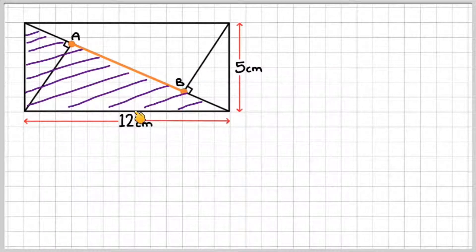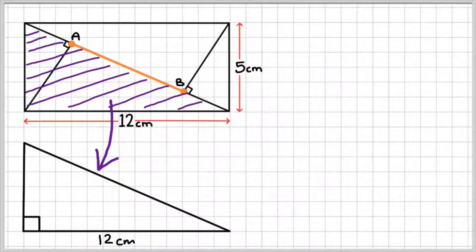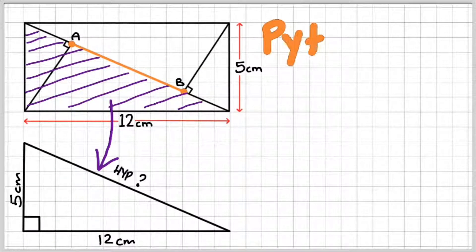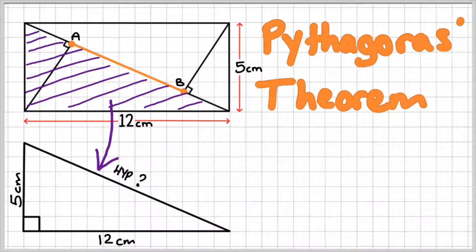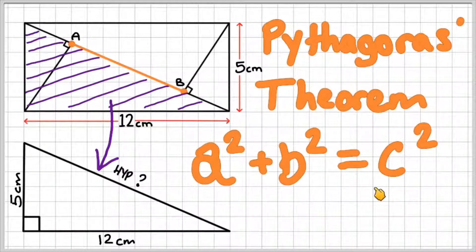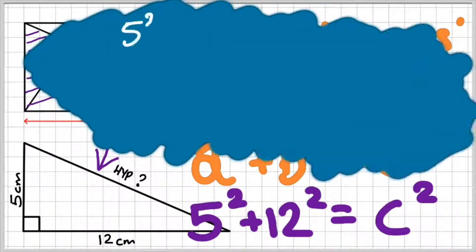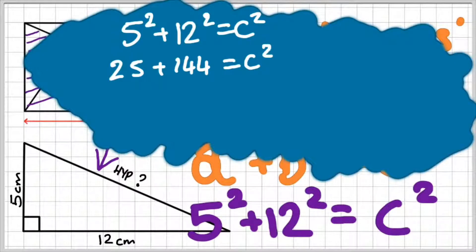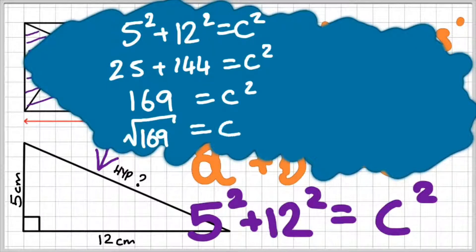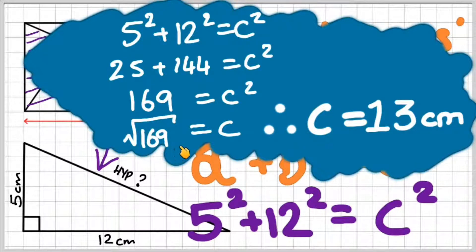This shaded triangle here, this purple one — we know that we have a base length of 12 and a side width of 5 centimeters. So we're going to use Pythagoras to work out the hypotenuse. Remember, that's A squared plus B squared equals C squared. As long as we agree that the hypotenuse is our C, A and B can be interchangeable between 5 and 12. So 5 squared plus 12 squared equals C squared — that's 25 plus 144 equals C squared — and the square root of 169 equals C, which is exactly 13 centimeters.